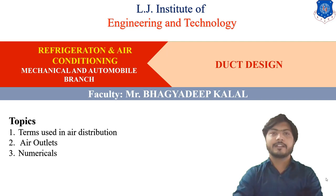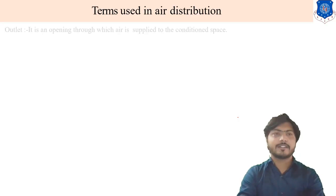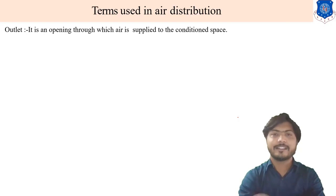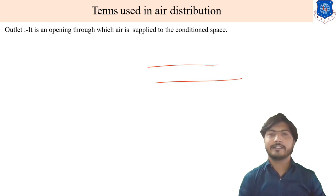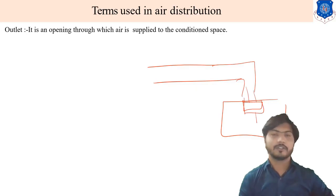Which type of terms are used in air distribution? The first term is an outlet. What do you mean by the outlet? It is an opening through which air is supplied to the conditioned space. Suppose this is our duct and this is our room — air is supplied into the room with the help of these outlets.